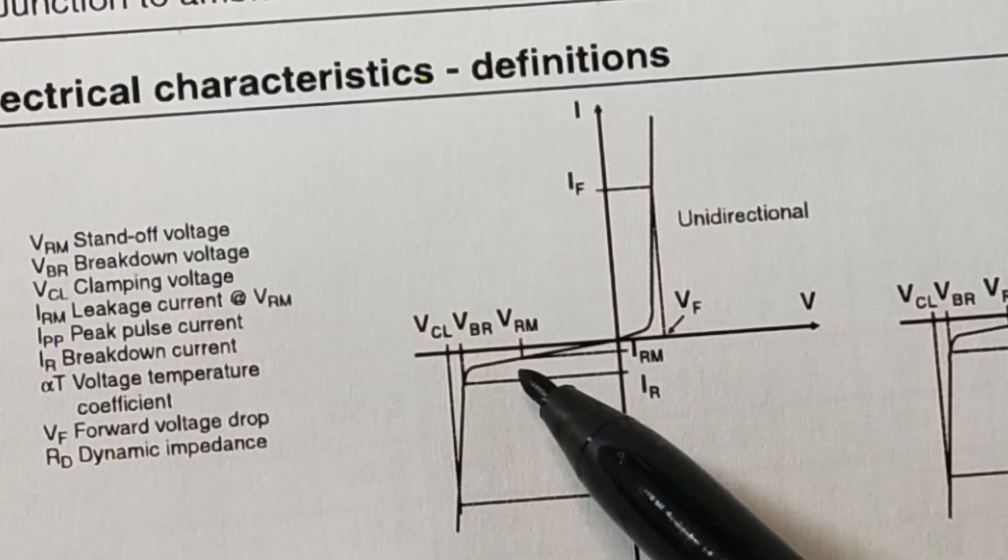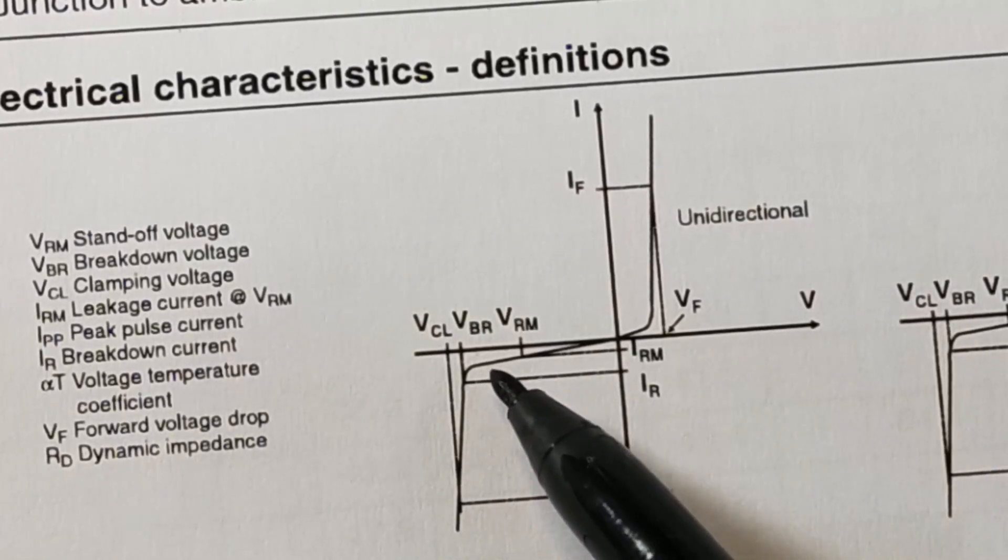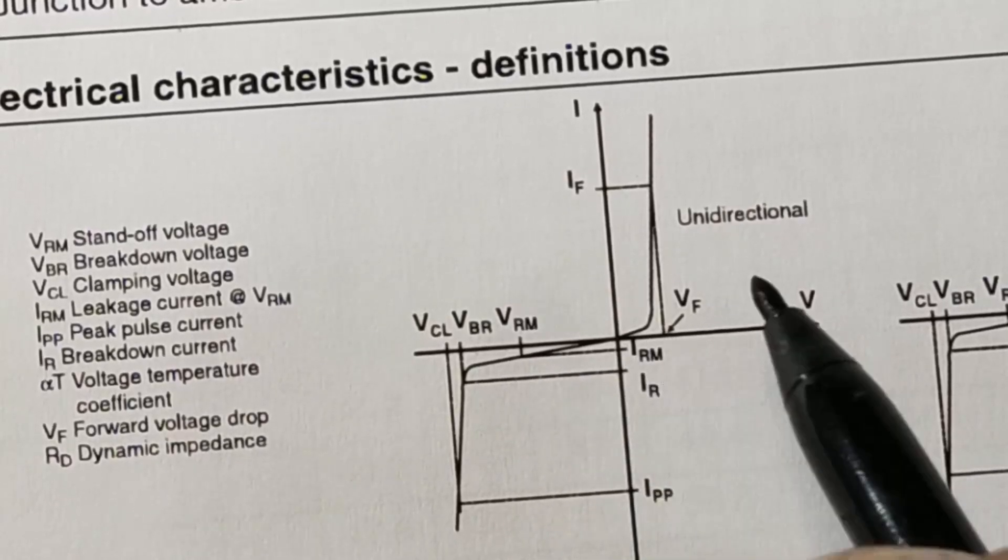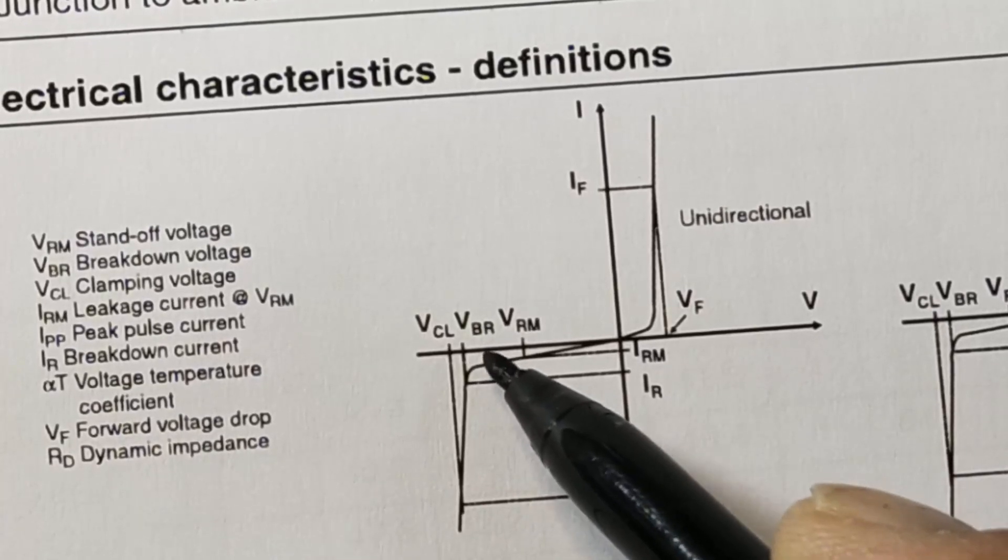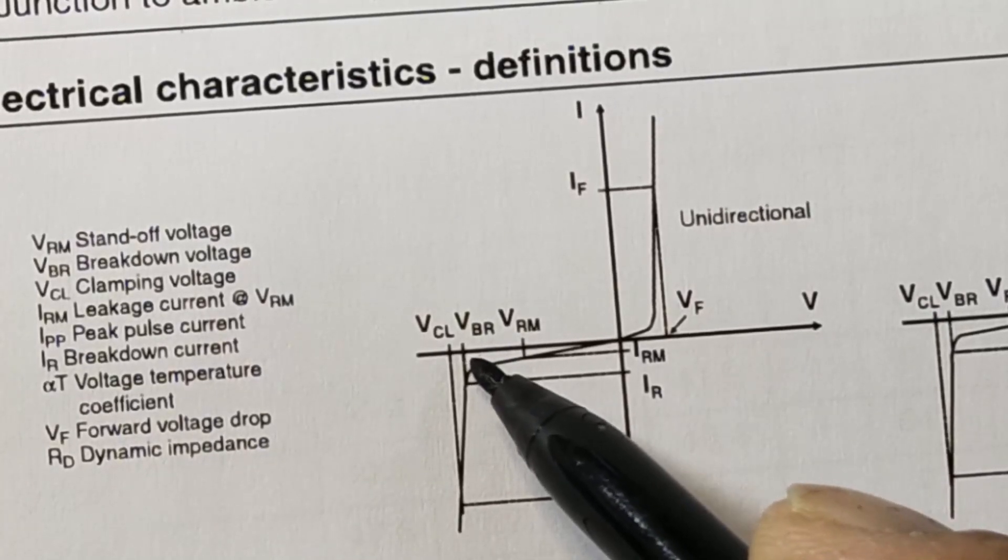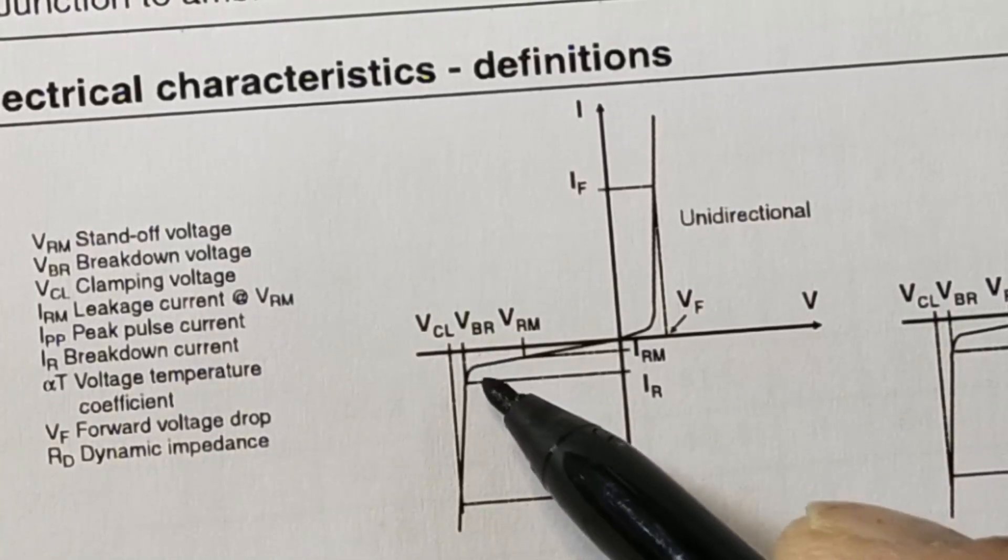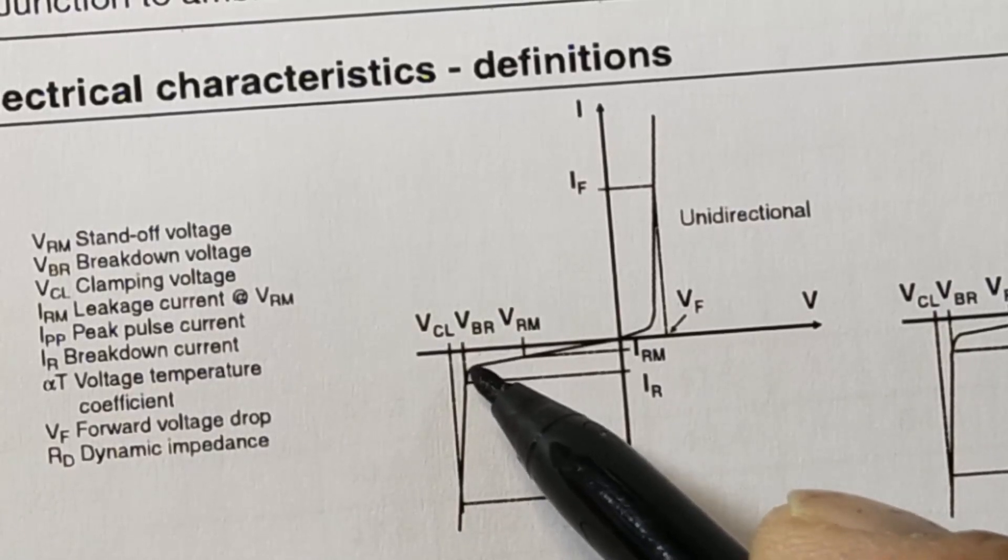There is a VRM - that is called reverse standoff voltage. In this region it will remain silent. And then it has a VBR - voltage breakdown. This is the point when any TVS diode will start to conduct.